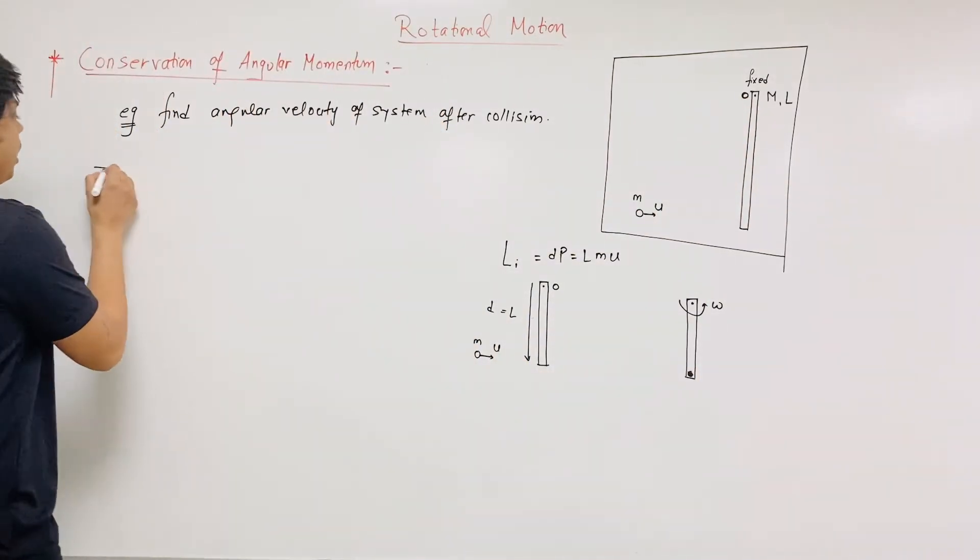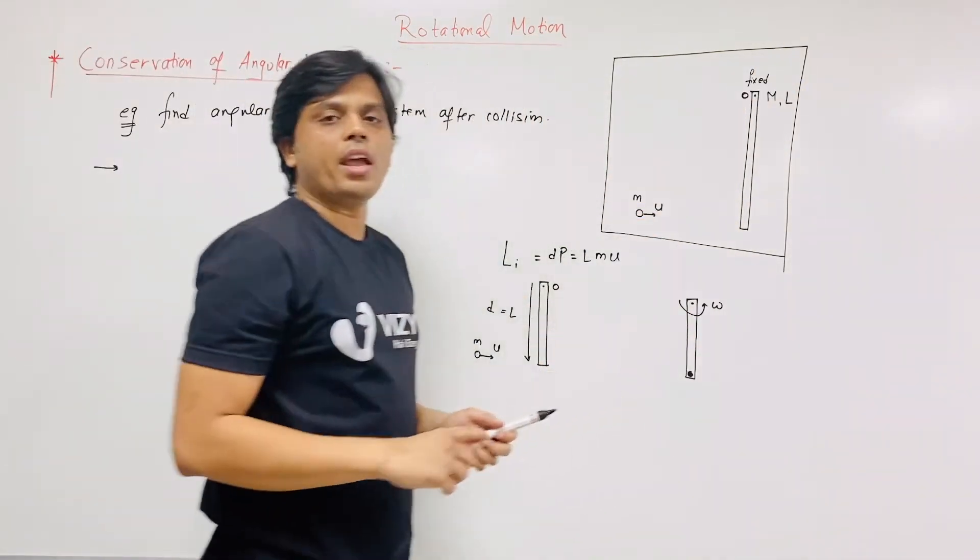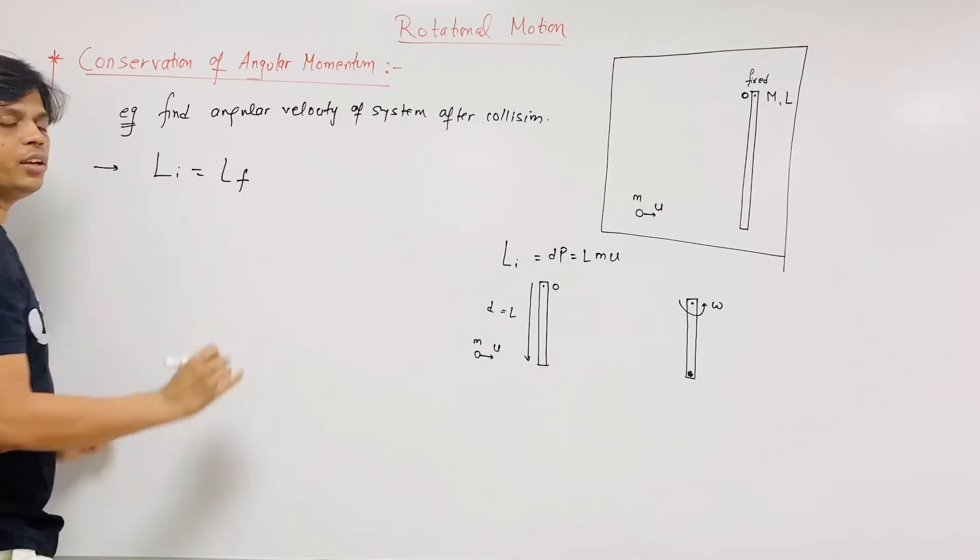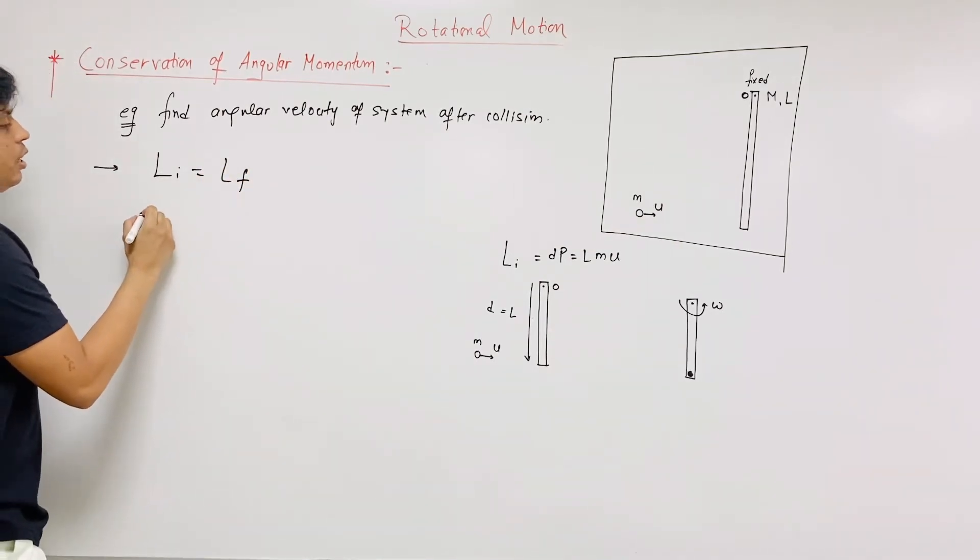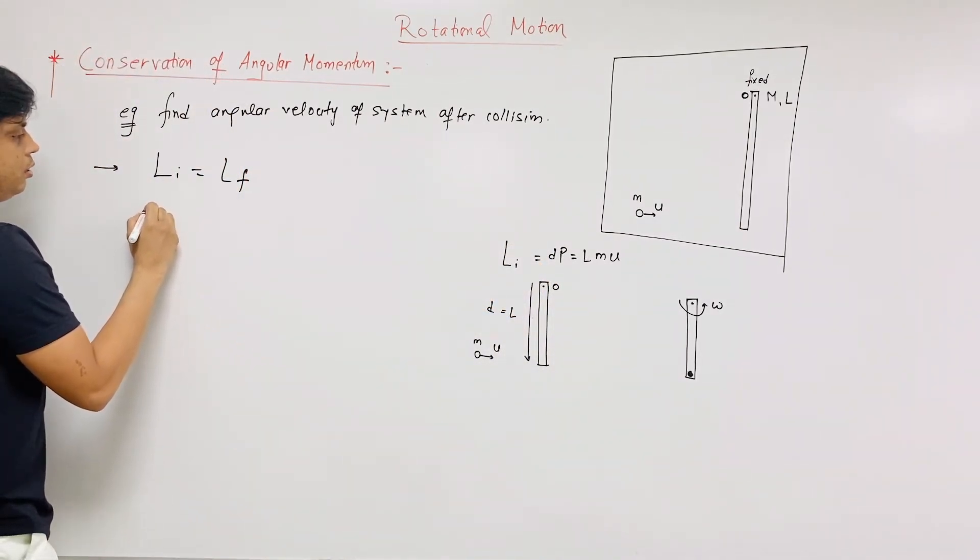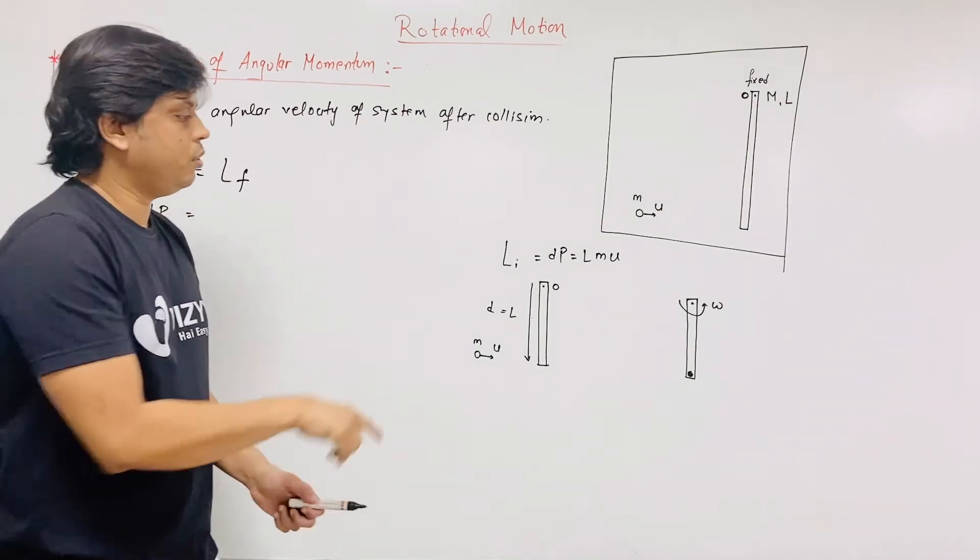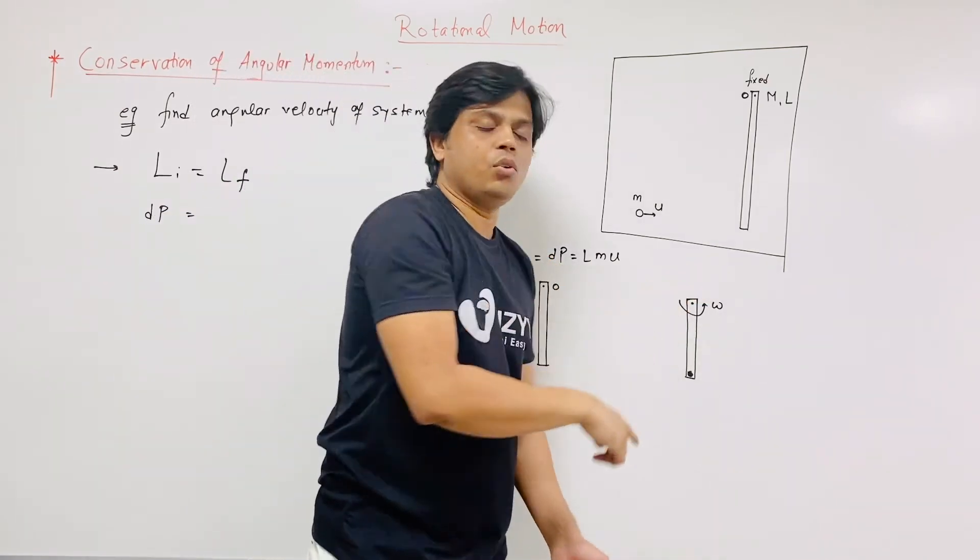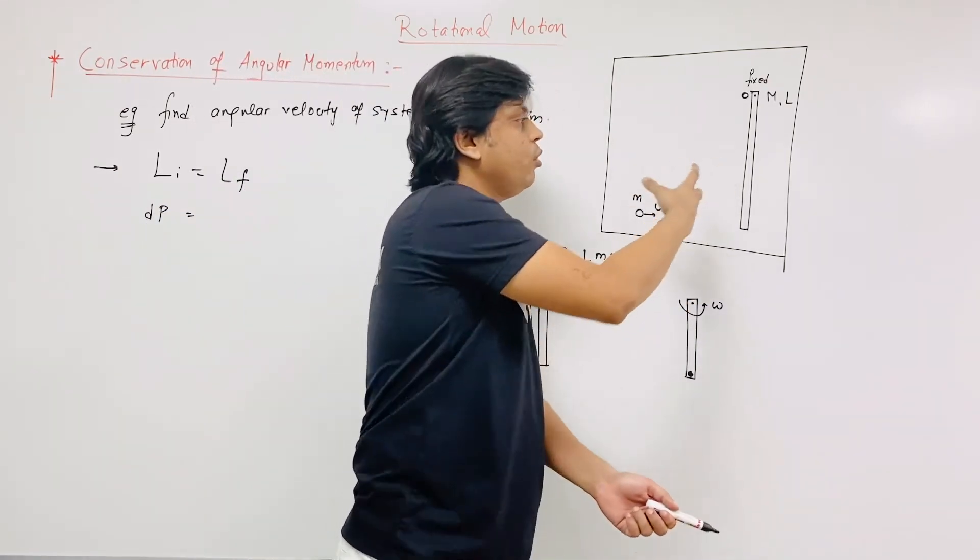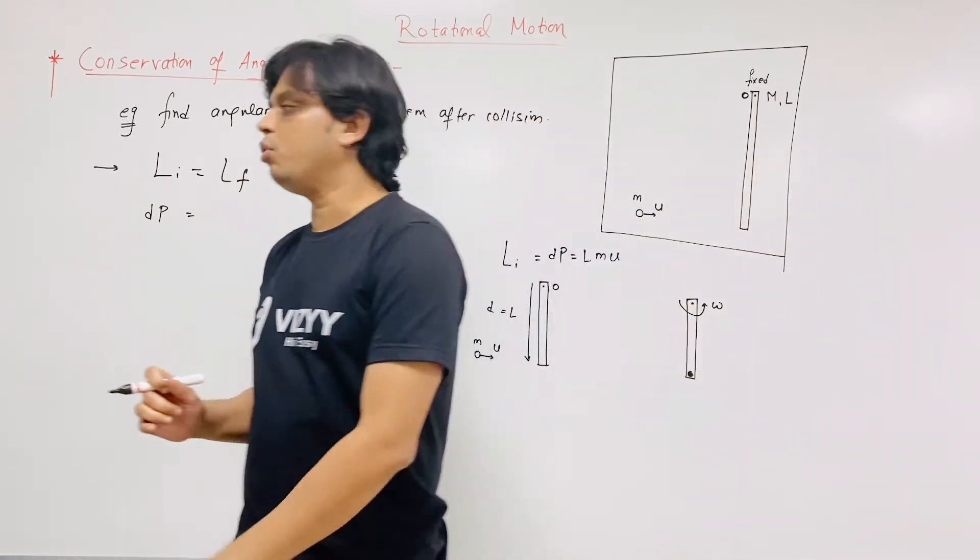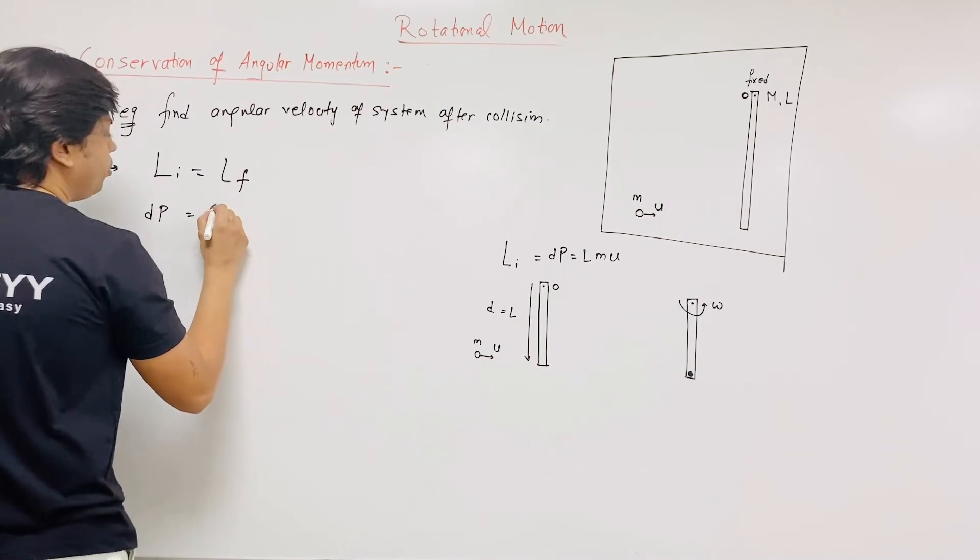So here, as we have considered this to be a whole system, so angular momentum is conserved. Initial angular momentum is equal to final angular momentum. What is initial angular momentum? Initial angular momentum is D into P. This is D, this is P and momentum is in this direction. And finally, after collision, this rod and this ball is performing a rotational motion. So for rotational motion angular momentum is I omega.